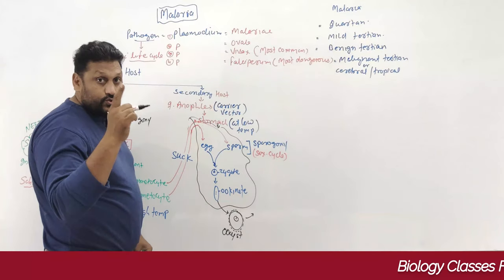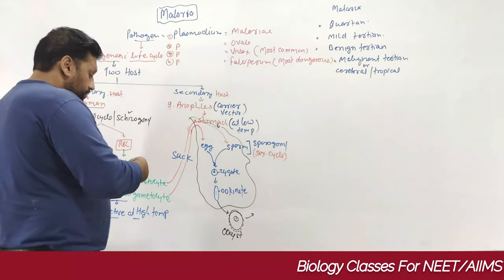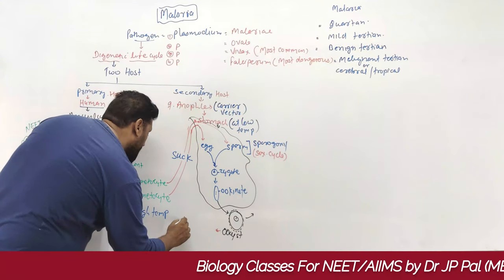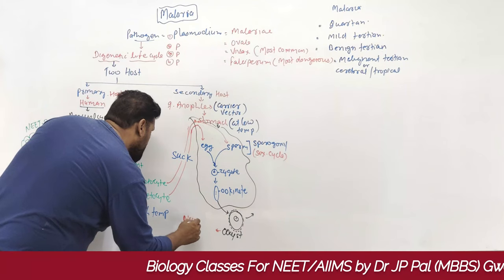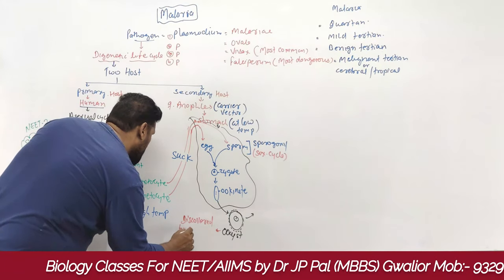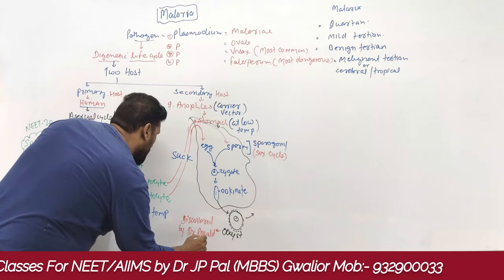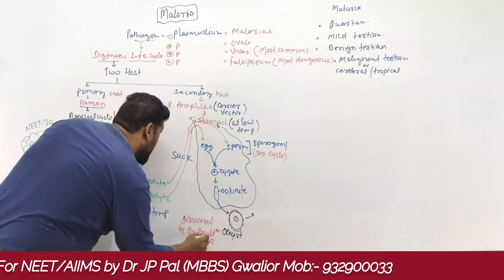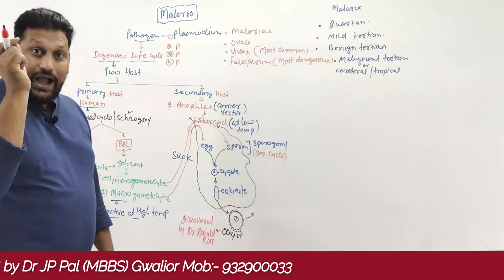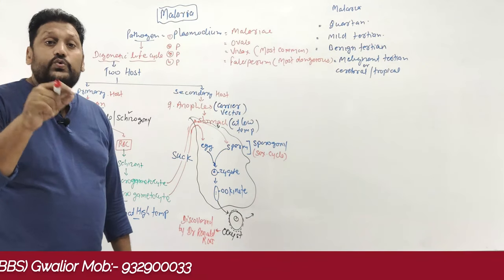The oocyst was discovered by Dr. Ronald Ross, who was awarded the Nobel Prize for this discovery. Ross found rough bodies on the outer side of the mosquito's stomach wall, which are called oocysts.